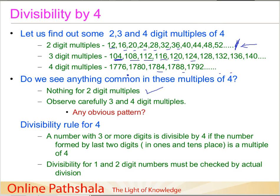How about four-digit multiples? We try to see: 76, 80, 84, 88, 92. If you divide these last two digits by 4, you will find they are divisible by 4. I have taken bigger numbers to give you an idea of larger multiples of 4. The obvious pattern in both three- and four-digit multiples is that the last two digits are multiples of 4.